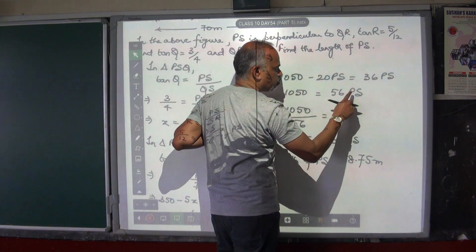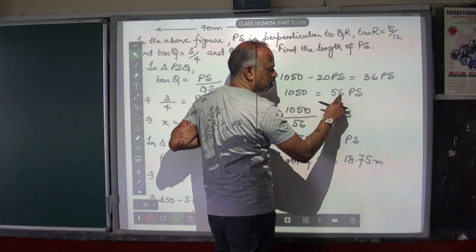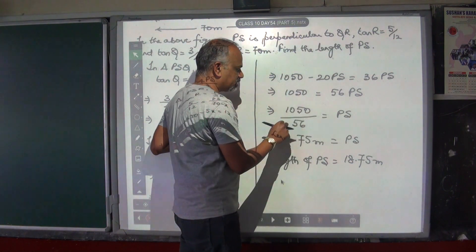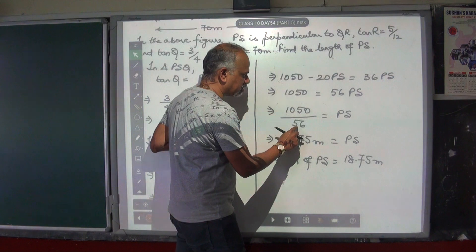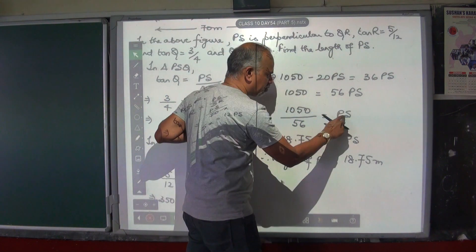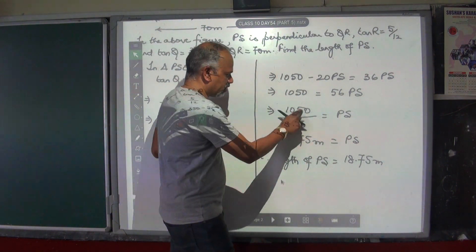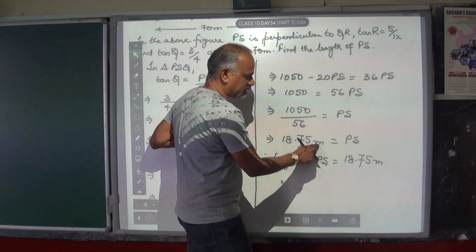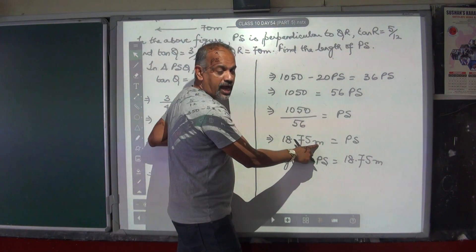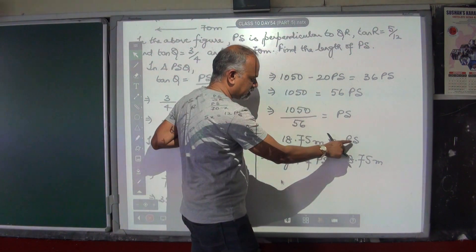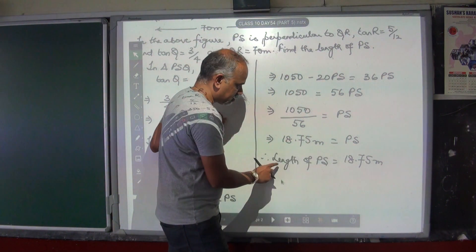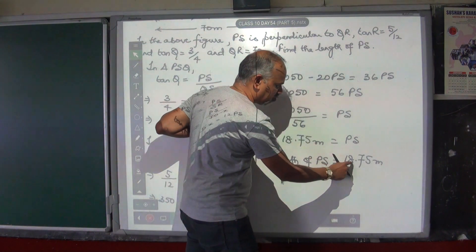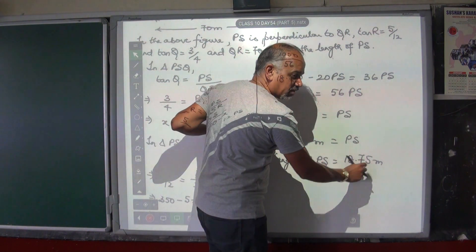Moving 20PS to that side gives 56PS. So 1050 divided by 56 will give you PS's value. If you divide this, you will get 18.75, which is the height PS in meters. So length of PS, which is what was asked, is 18.75 meters.